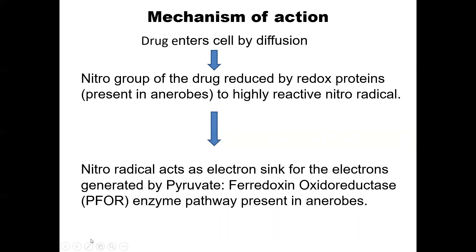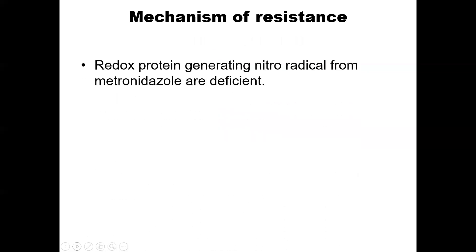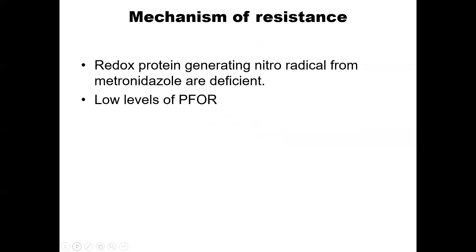The energy metabolism of the anaerobes suffers because the electrons that are produced by the PFOR pathway are scavenged by the nitro radicals. Anaerobes do not have a mitochondria to aid in any other kind of metabolism, so their energy metabolism suffers in the presence of metronidazole. Some organisms have developed resistance to metronidazole, mainly because the redox proteins generating the nitro radical are deficient, or they may possess low levels of PFOR.